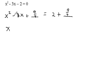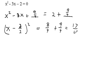I get x minus 3 halves, squared equals... Now, this is really 8 fourths, isn't it? 8 fourths plus 9 fourths, and that gives me 17 fourths.